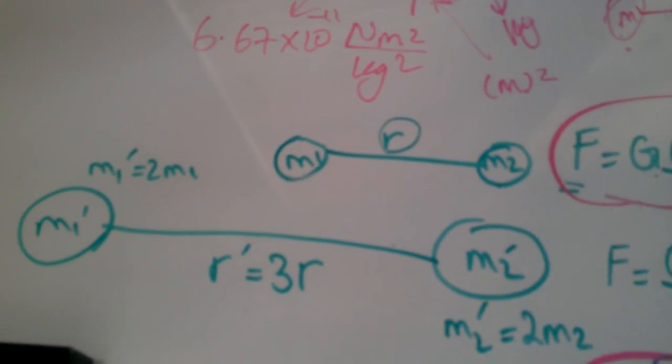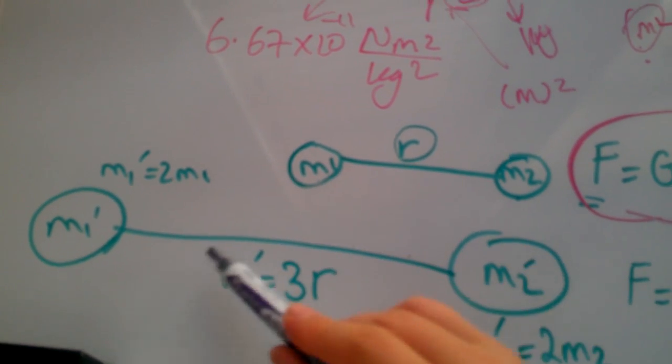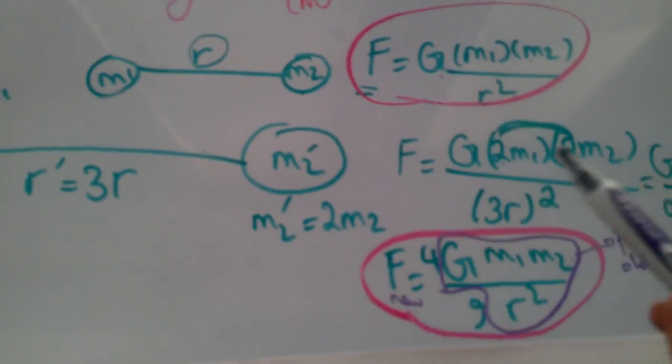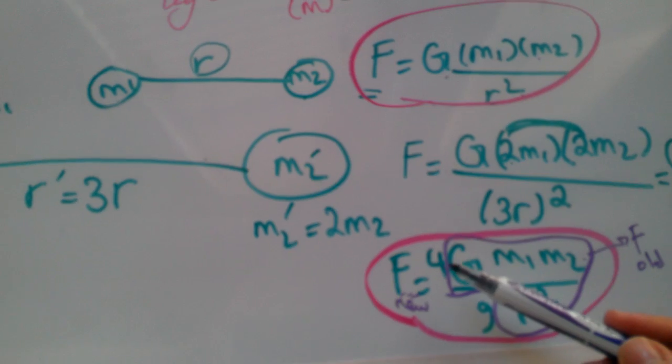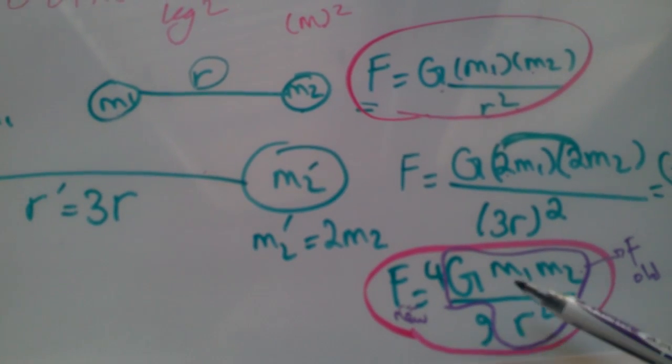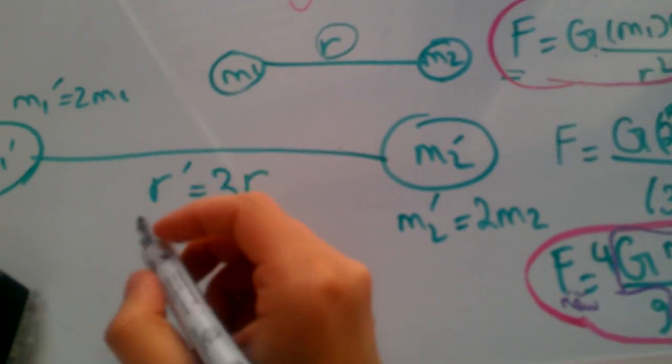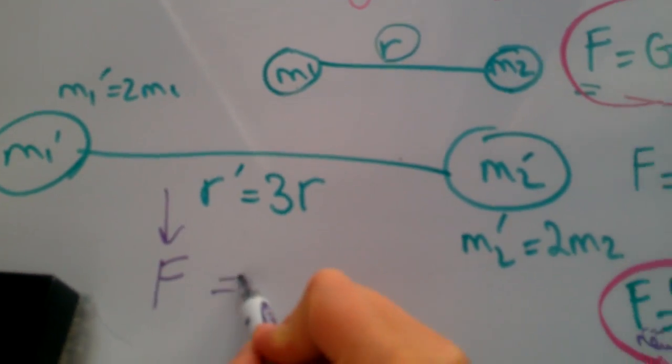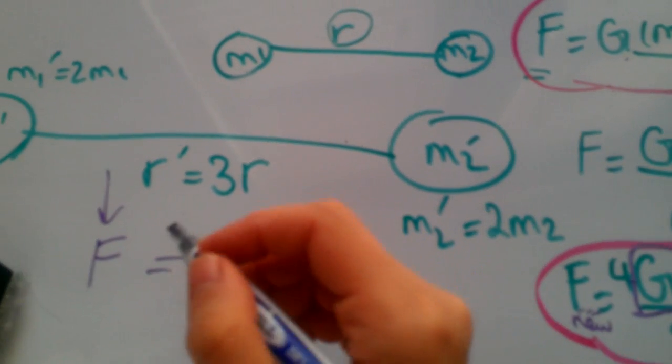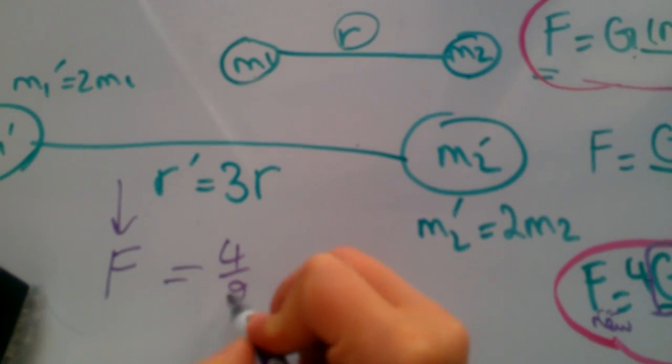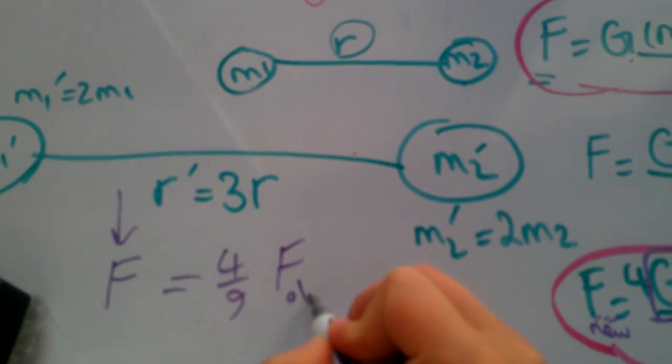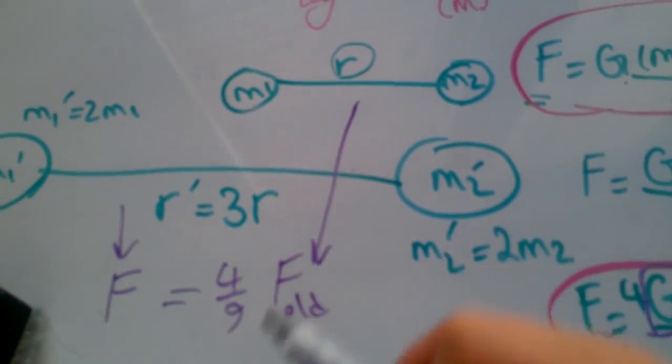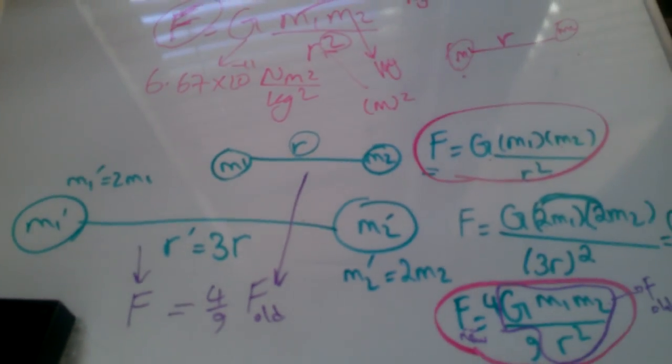So if I ever double my masses and triple the distance between them, my new force is 4 ninths of before. So the gravitational force here in the second case becomes 4 ninths of old force.